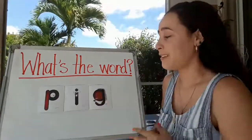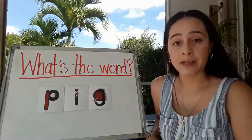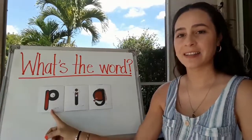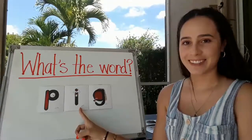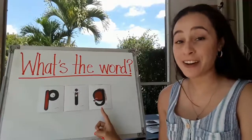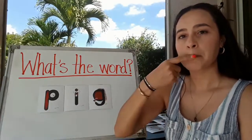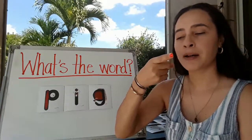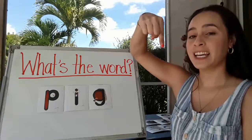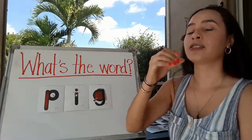Let's do another one. We're gonna go ahead and again say each letter name and then say each letter sound. What letter is this? P. Good. What letter is this? I. And what letter is this? G. Very good. Let's do the sounds now. What's the sound for the letter P? P, P, P. What's the sound for the letter G? G, G. Nice.